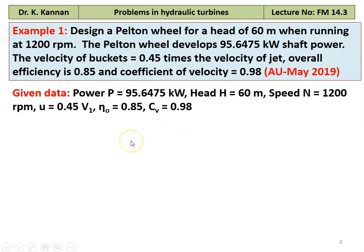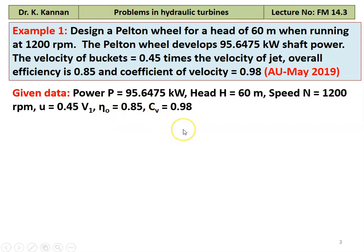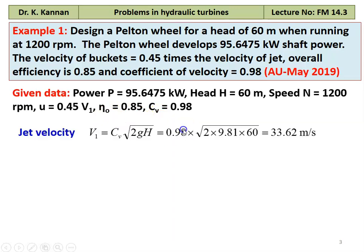Given data: Power = 95.6475 kW, Head H = 60 m, Speed N = 1200 RPM, peripheral speed U = 0.45 × V1, overall efficiency = 0.85, Cv = 0.98. We calculate the jet velocity: V1 = Cv × √(2GH) = 0.98 × √(2 × 9.81 × 60) = 33.60 m/s.